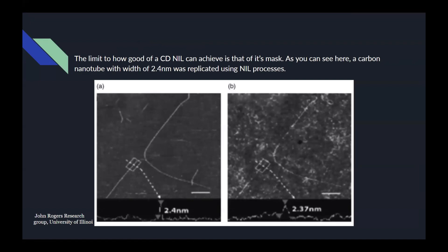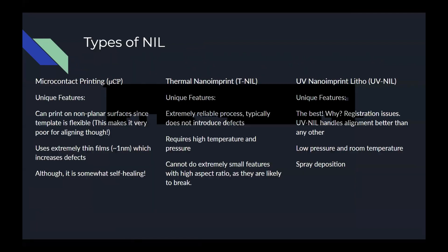Let's dive deeper into the key processes of nanoimprint by discussing the three main types: microcontact, thermal, and ultraviolet.